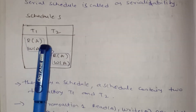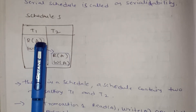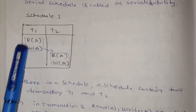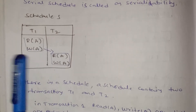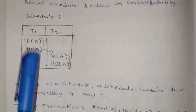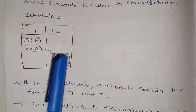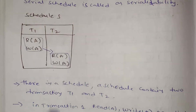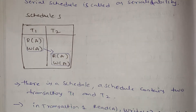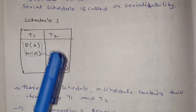In transaction 1, we perform Read A — this represents my account balance. Then we perform Write A, completing the transaction. In transaction 2, we perform Read and Write operations — this represents the credit and debit process. The read and write operations are done.